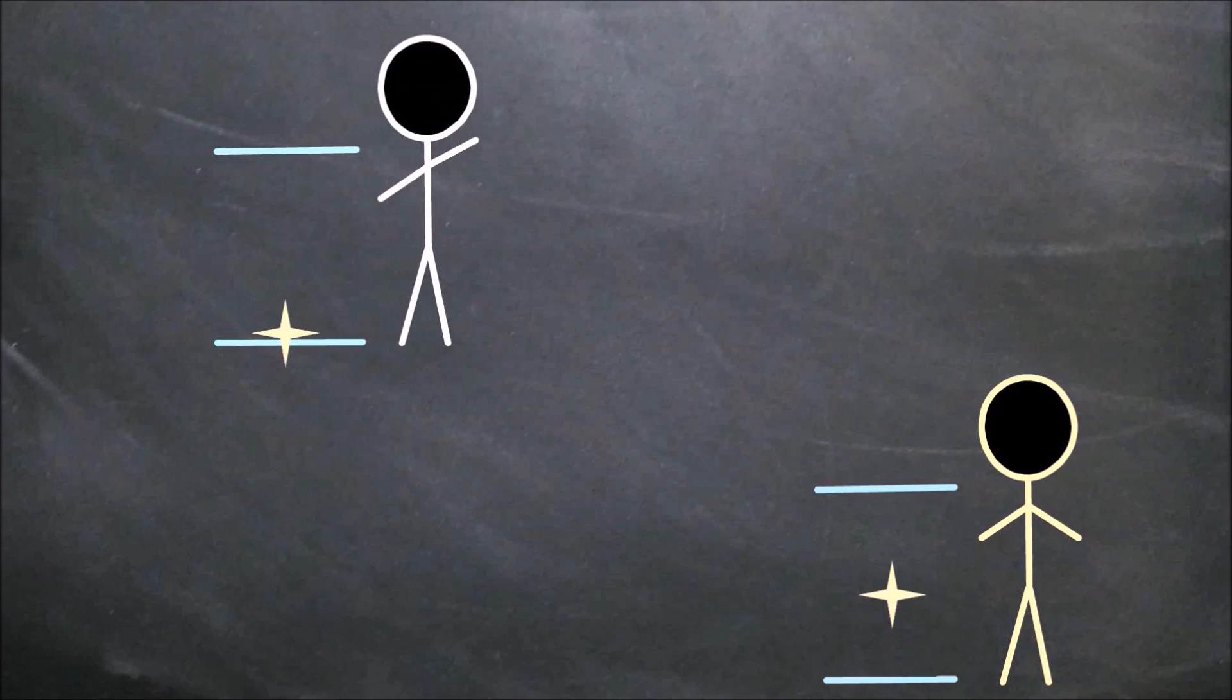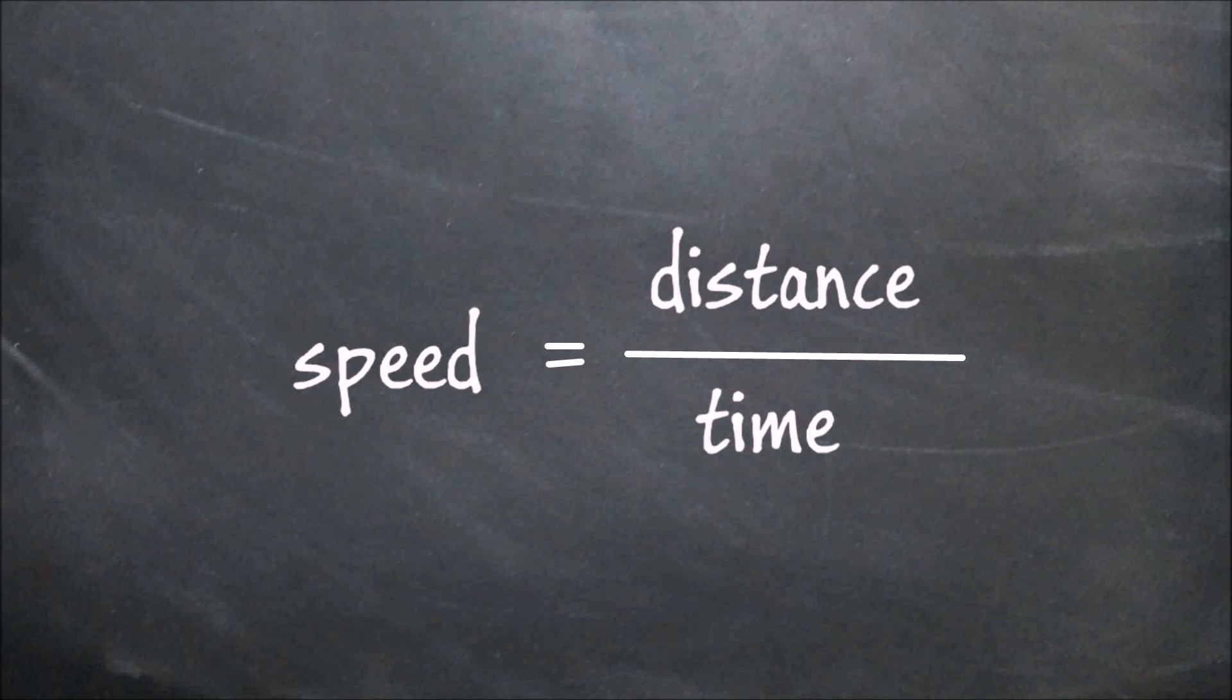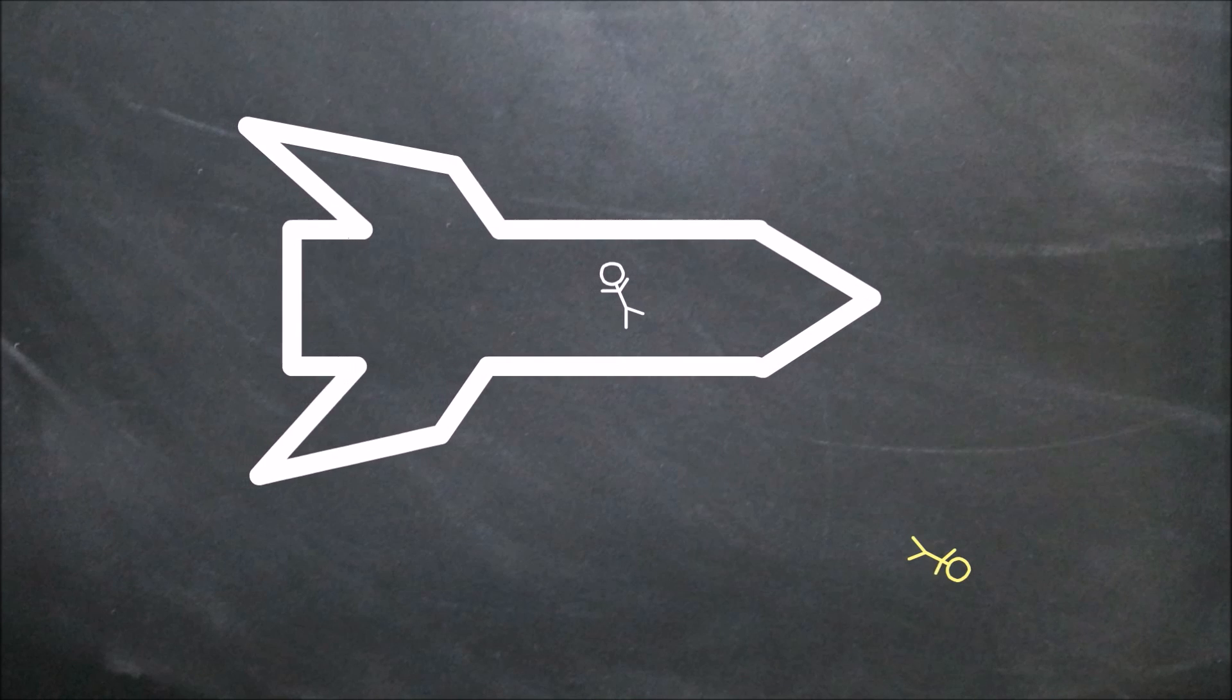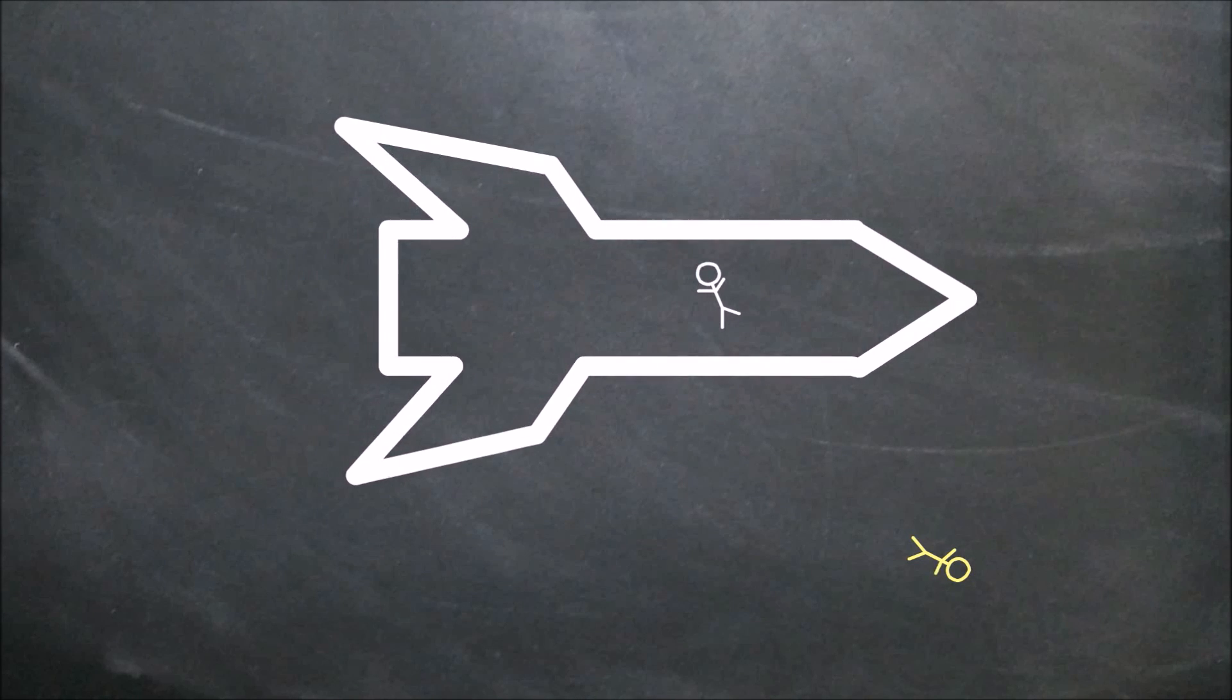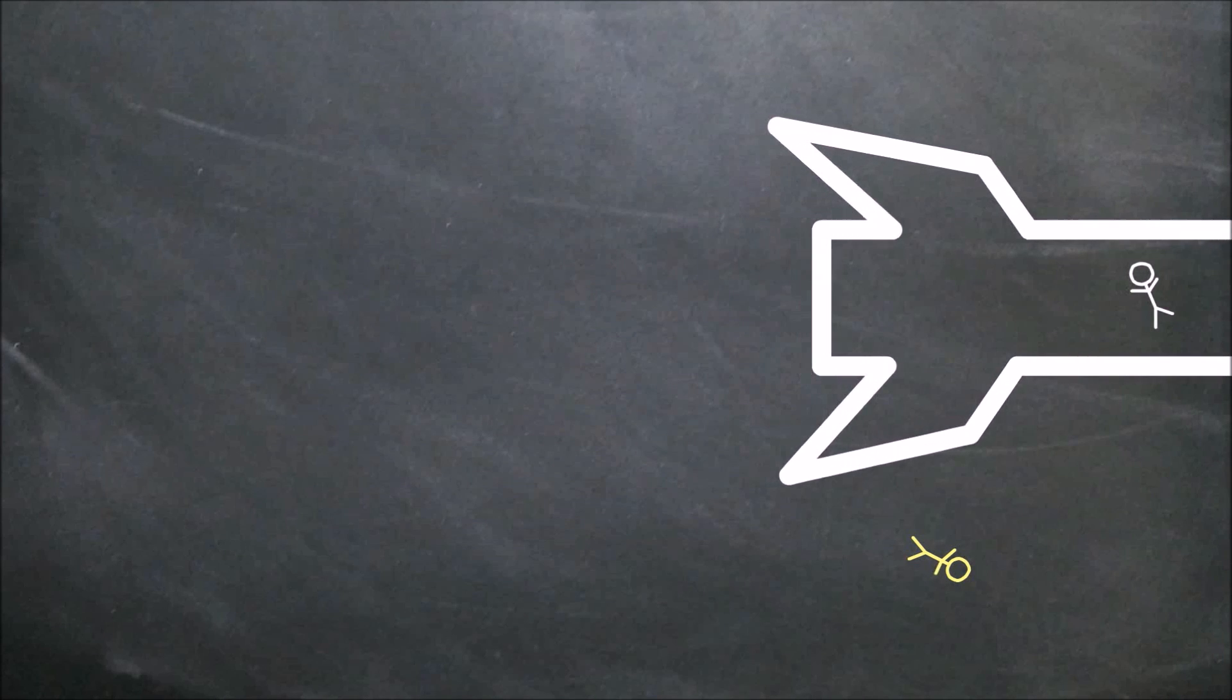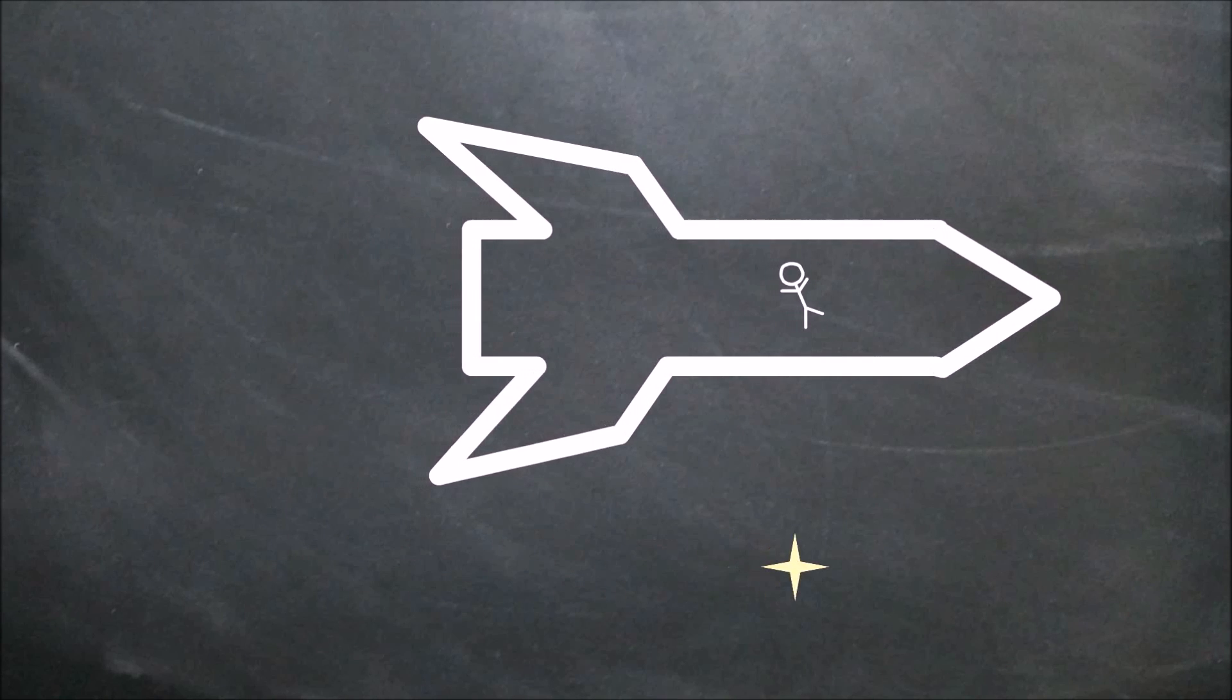As we learned last time, time dilation and length contraction occur when traveling at high speeds, and if shorter distances and extended times mean anything, it's that speeds are lower than expected. As the rocket gets faster, its speed gets dampened by the effects of relativity. This happens in such a way that you can always increase your speed, but the dampening always keeps you from reaching the speed of light in a vacuum.